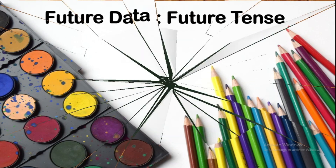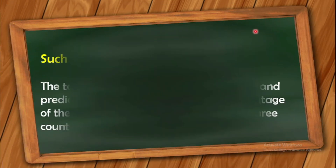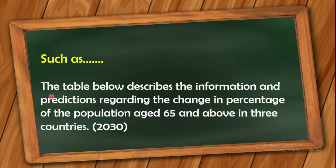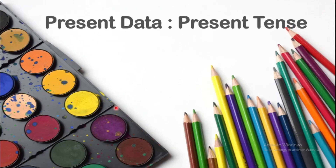Now if the data is in future tense, you have to use future tense. For example: 'The table below describes the information and predictions regarding the change in percentage of the population aged 65 and above in three countries, which is in 2030.' Here the word 'prediction' denotes the future tense, so you have to use future tense.